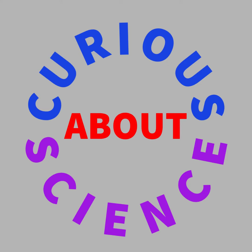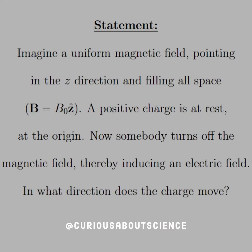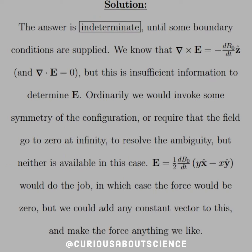Another little brain teaser dealing with Faraday's law. Imagine a uniform magnetic field pointing in the z direction and filling all space, so B equals B naught z-hat. A positive charge is at rest at the origin. Now somebody turns off the magnetic field, thereby inducing an electric field. In what direction does the charge move? Pretty interesting question. Let's dive in.